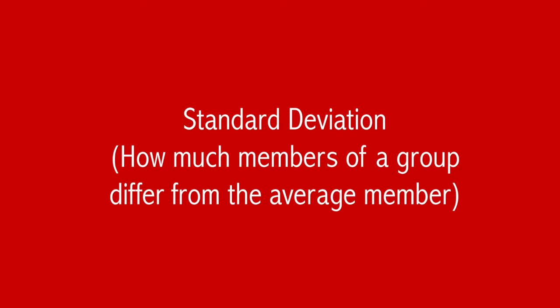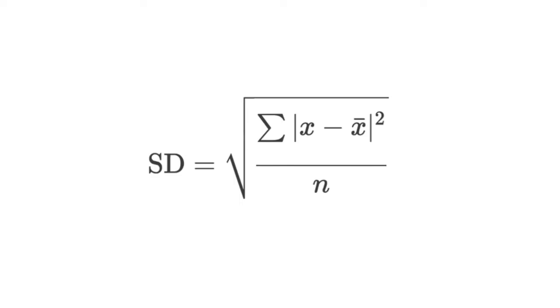The final topic is standard deviation — by how much members of a group differ from the mean. The formula is: for each member, find the difference between the member and the mean, square it, sum all those squared differences, divide by the number of members N, and take the square root. That gives standard deviation. I suggest you learn this formula as it is part of most syllabuses, but you can also learn to calculate it on your calculator.